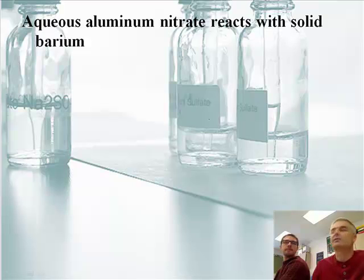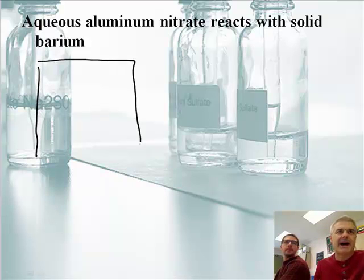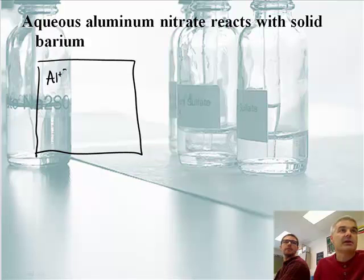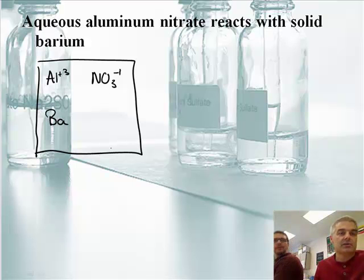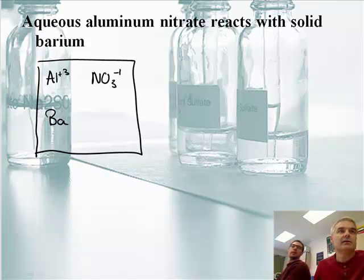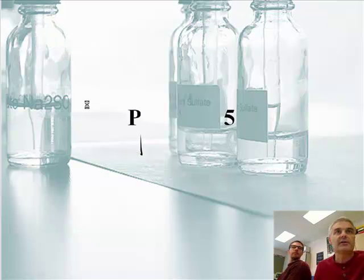Aqueous aluminum nitrate — we've got a polyatomic ion, this is good. Let's make a scratch pad box. Aluminum is Al³⁺ — from the periodic table he has a charge of 3 positive. Nitrate is a polyatomic ion; look at the back of your table — it has a minus one charge. And solid barium has no charge. You cannot have an ion that is a solid. Nitrate is the girl with the negative charge, and barium with its positive charge is going to compete for her.